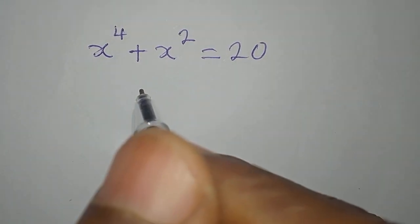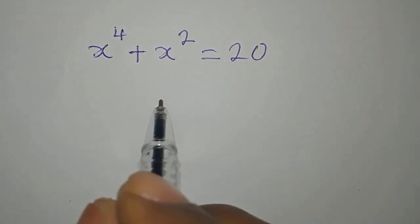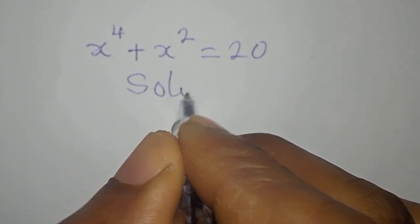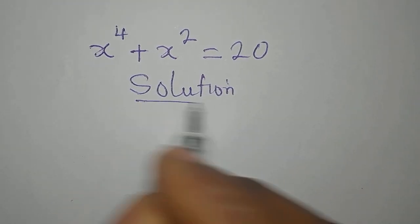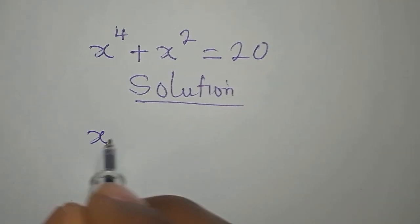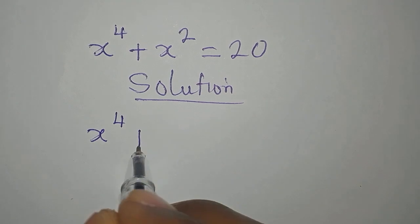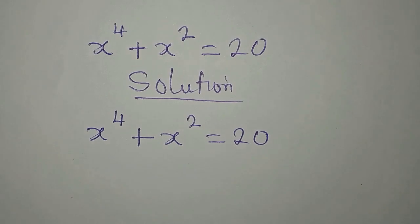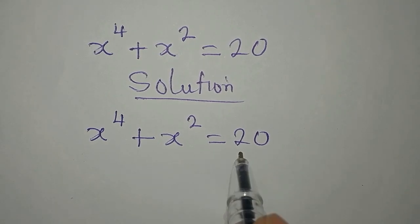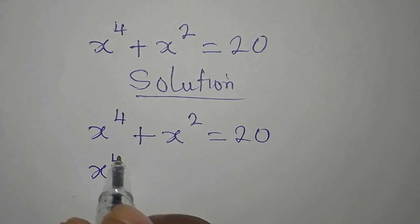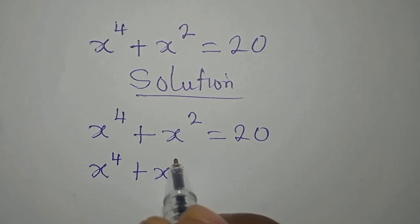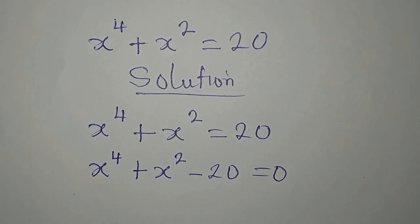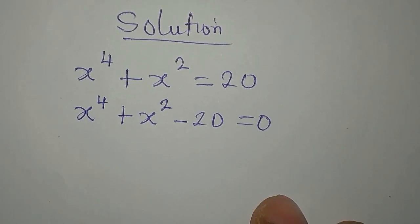Hello everyone, let's provide the solution to this problem very quickly. Remember, we are providing the real and the complex solutions. The equation is x to the power 4 plus x to the power of 2 equals 20. The next step is to bring 20 to the left, so x to the power of 4 plus x to the power of 2 minus 20 equals 0.